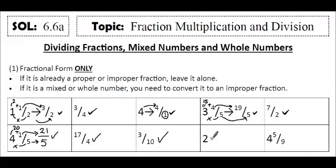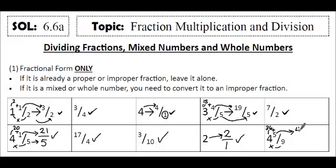2 is a whole number, so we would want to get that into an improper fractional form. We would write the 2 as the numerator, and we put all whole numbers over 1 to show that we have 2 wholes. Now this is in fractional form. 4 and 5 ninths is a mixed number and it's not in fractional form. So 9 times 4 is 36, and 36 plus 5 gives us 41. So that's how we get our new numerator, and we are going to keep our denominator the same. So 41 ninths is an improper fraction, and now this is also in fractional form.